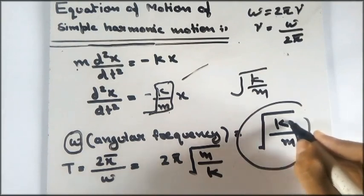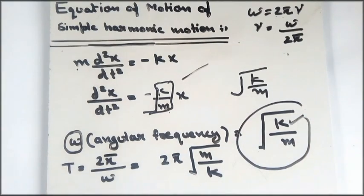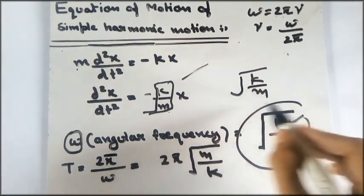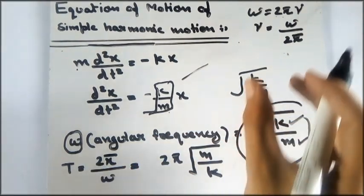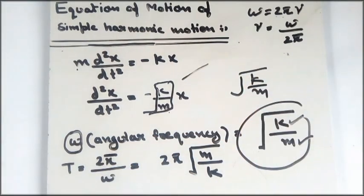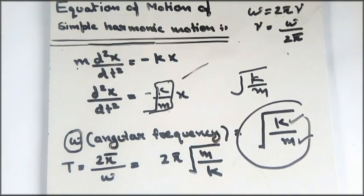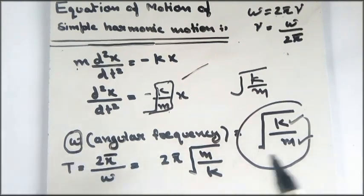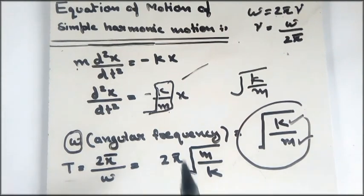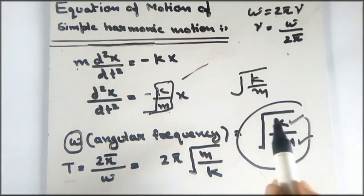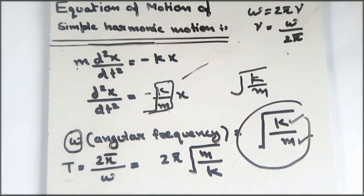If we know the spring constant k and the hanging mass m, we can calculate the angular frequency ω = √(k/m) at which the system oscillates with simple harmonic motion. The time period is then T = 2π/ω = 2π√(m/k), which is just the reciprocal of the angular frequency expression.